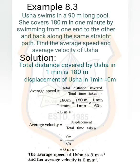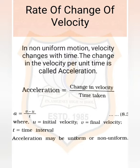Calculating average speed: total distance divided by total time = 180 meters / 1 minute. Converting to seconds: 180 meters / 60 seconds = 3 meters per second — that is Usha's average speed. For average velocity: total displacement divided by total time = 0 / 60 = 0. So her average velocity is zero.